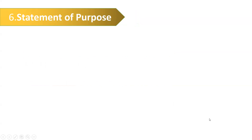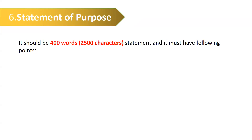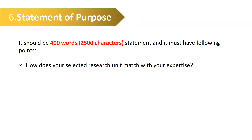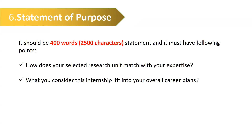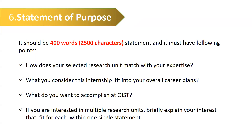The sixth document is the most important one — it largely determines whether or not you will be selected. This is the Statement of Purpose, which should be 400 words or 2,500 characters. It must address all of the following points: how your selected research unit matches your expertise; what you consider this internship in relation to your overall career plan; what you want to accomplish at OIST; and if you are interested in multiple research units, briefly explain each unit in just one line. Make sure your Statement of Purpose answers all four of these questions, otherwise it will not fulfill OIST's requirements.